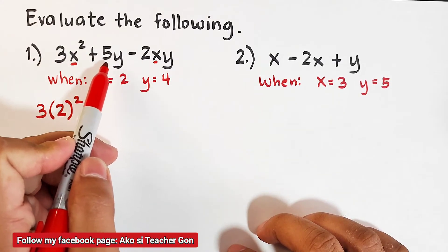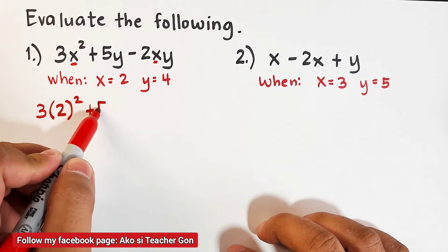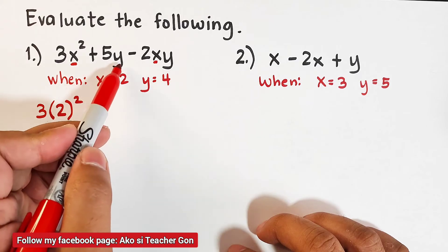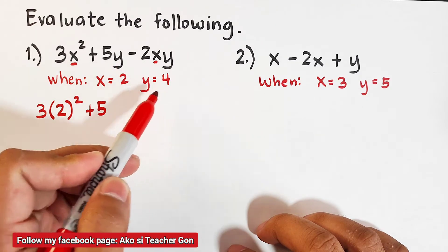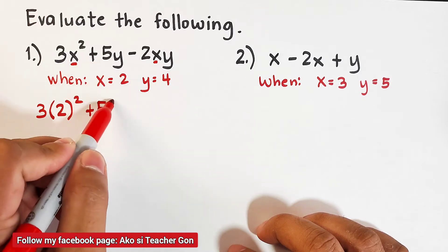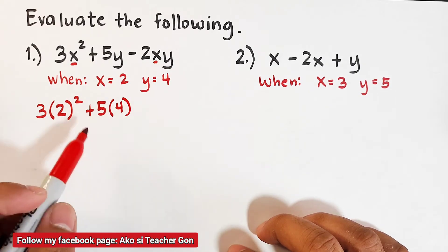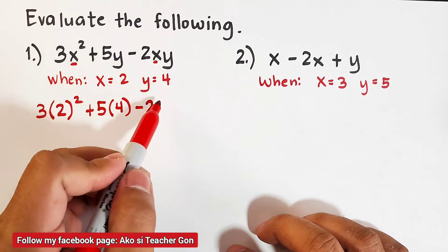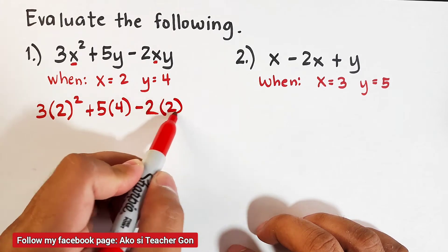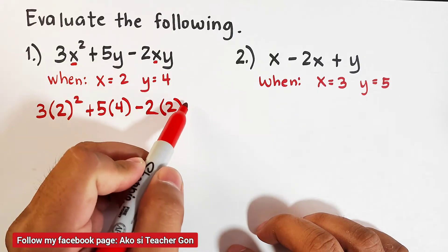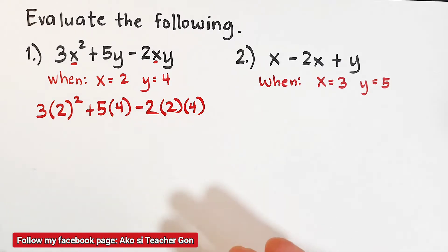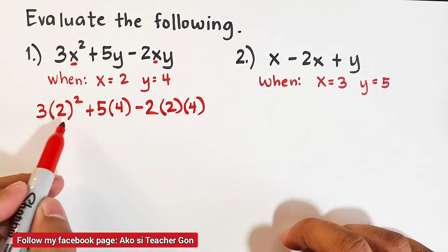For this term we have 5y — that is 5, and since 5y indicates multiplication, we will replace y by 4 because y is equal to 4, so that is 5 times 4. And for this term we have negative 2, then x replaced by 2, times y replaced by 4. As you can see, we have already substituted the values of x and y, and all we need to do is perform the operations.